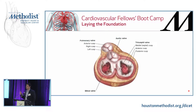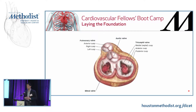Both valves have three leaflets. The tricuspid has septal, anterior, and posterior; the pulmonic has anterior, left, and right. The tricuspid annulus is the largest annulus, so you'll get the lowest flows through it. Another anatomic tidbit: the septal leaflet of the tricuspid valve attaches just slightly more apically on the interventricular septum than the mitral does.